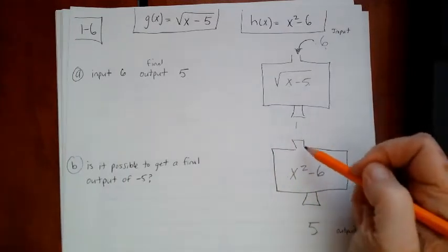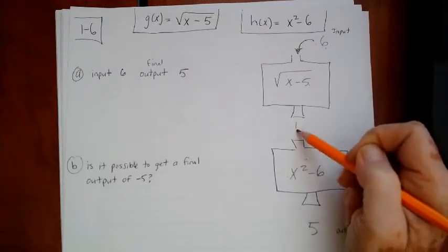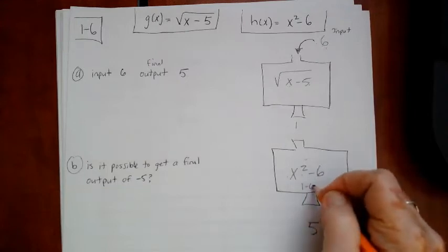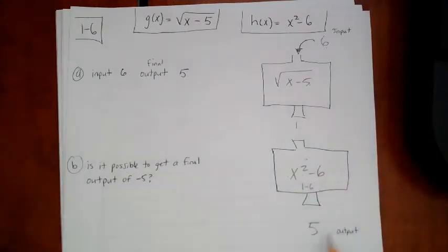And then that one's going to go into the bottom machine. So I plug the 1 into the bottom machine. So it's 1 squared minus 6. Well, 1 squared is 1. And 1 minus 6. That gives me negative 5. So I almost got the output I want. But it was a negative 5.